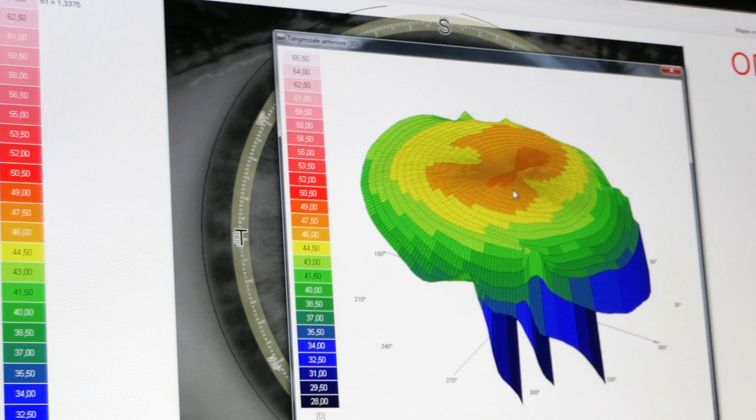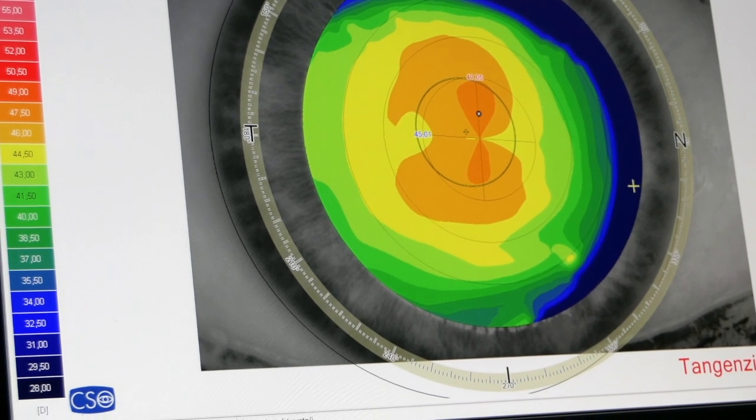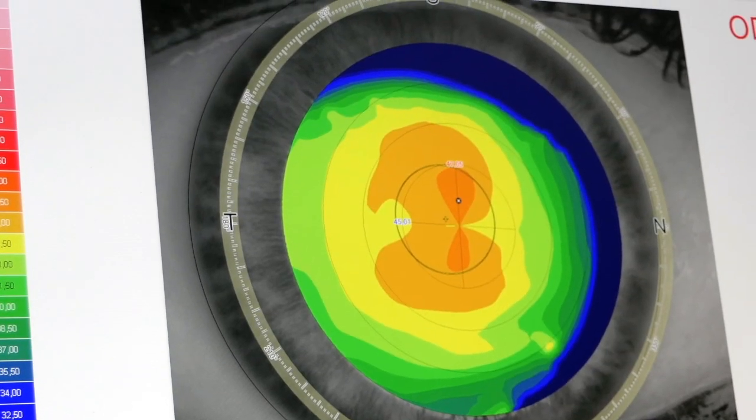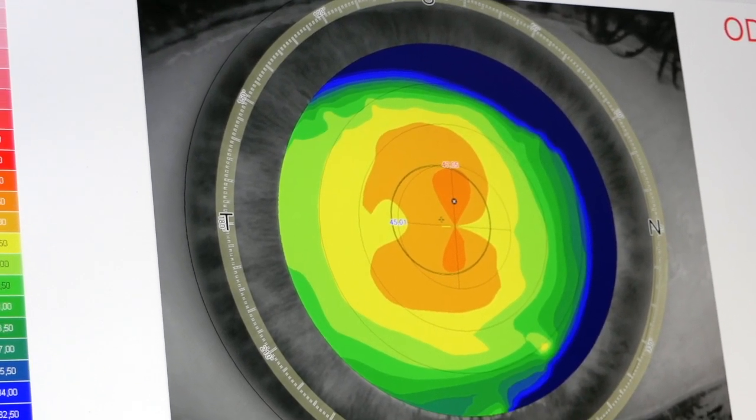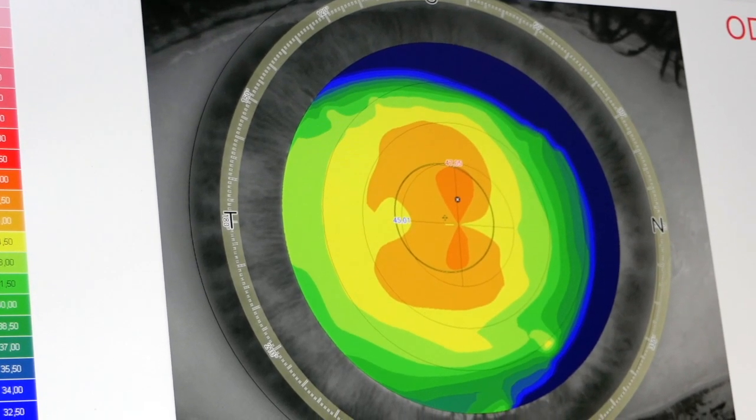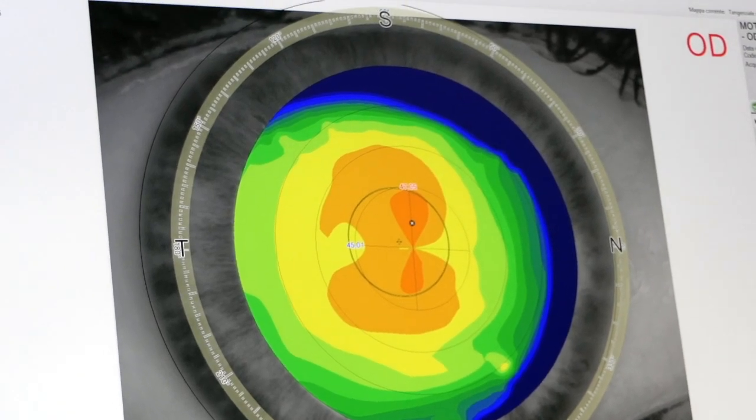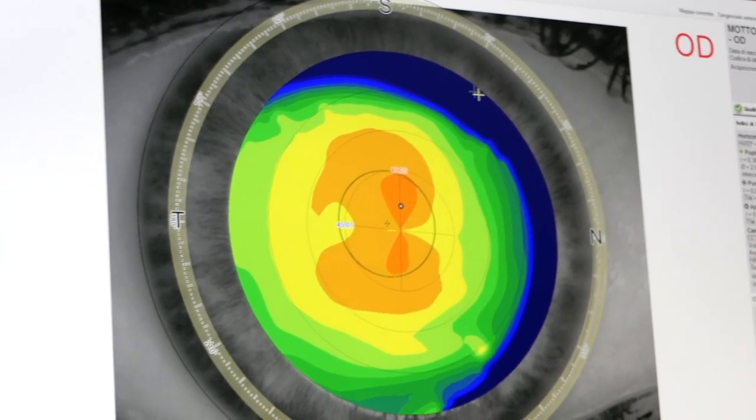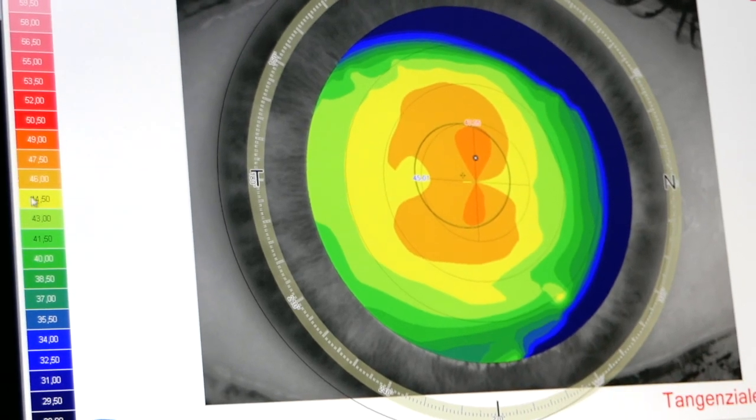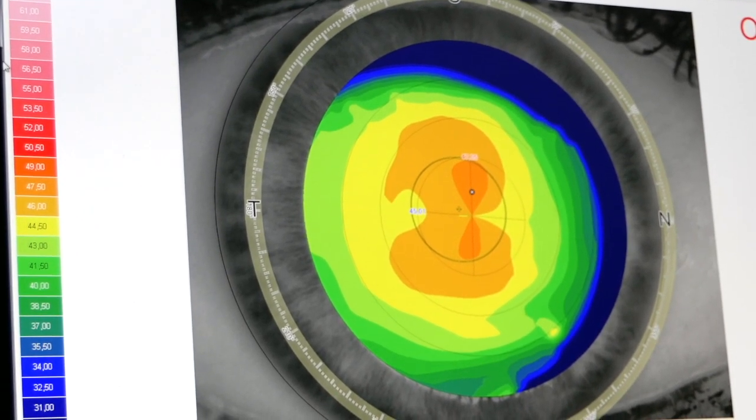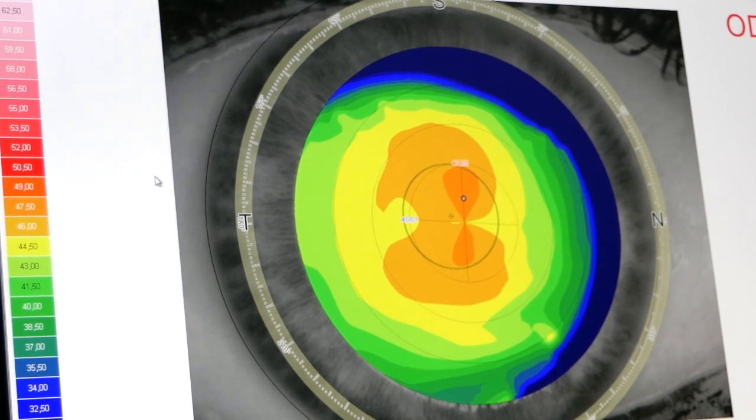The corneal topography is expressed in diopters. Here on the left, the color scale is represented in which there are the coldest colors that show the flattest part of the cornea. The intermediate colors represent the intermediate part, and the warmer colors represent the most curved part of the cornea.